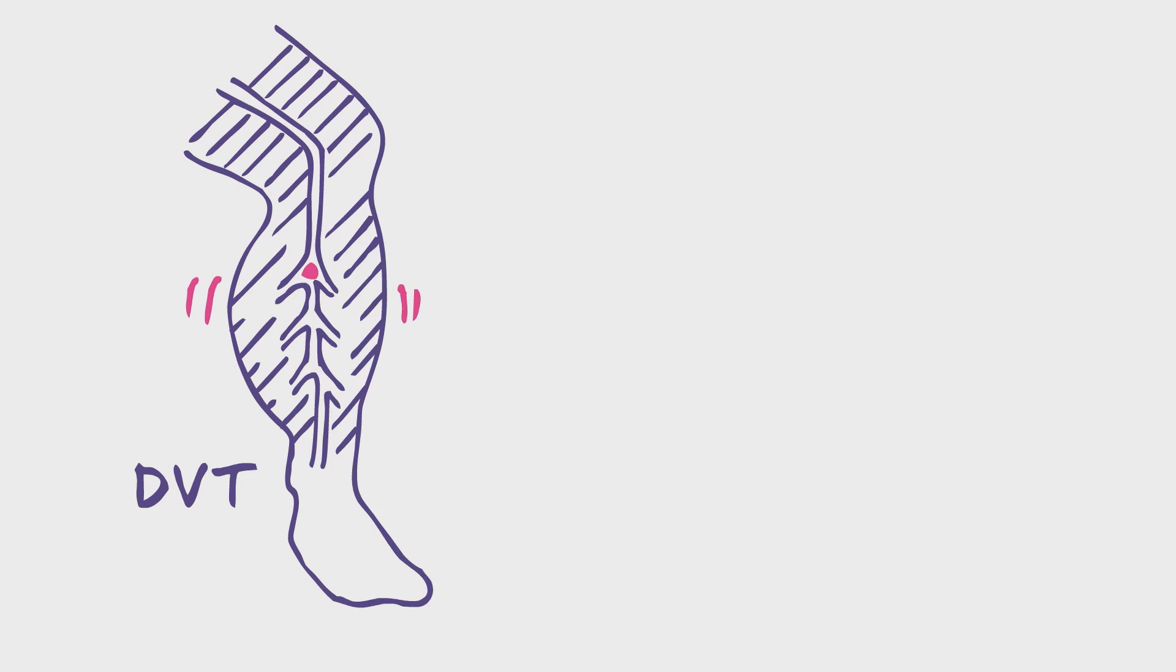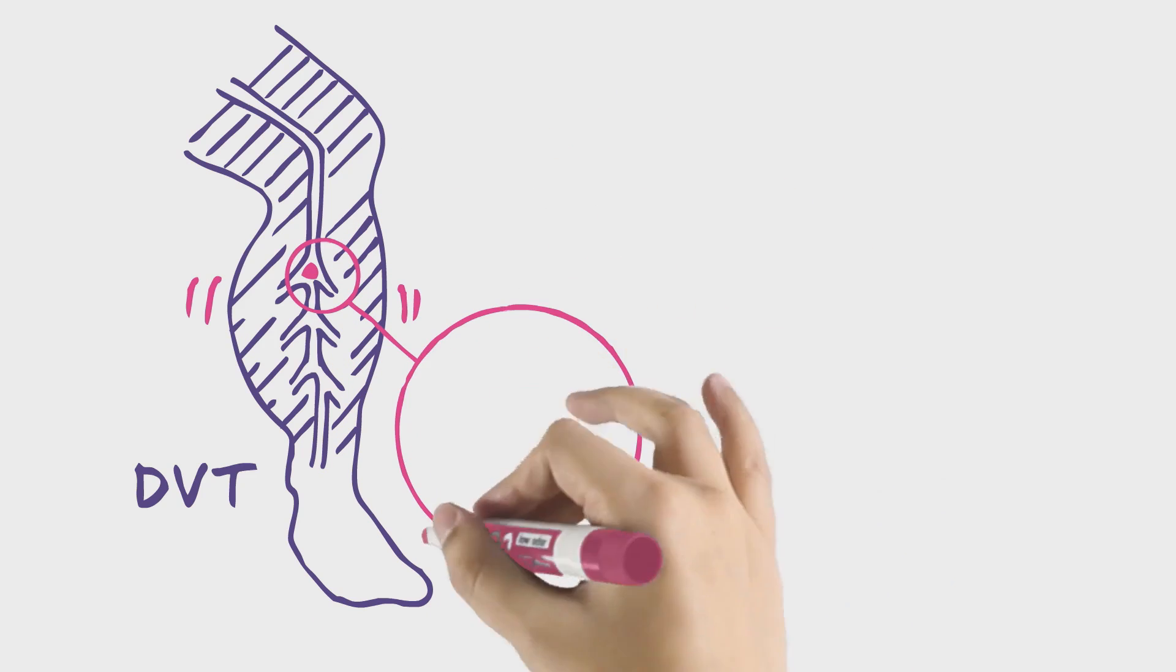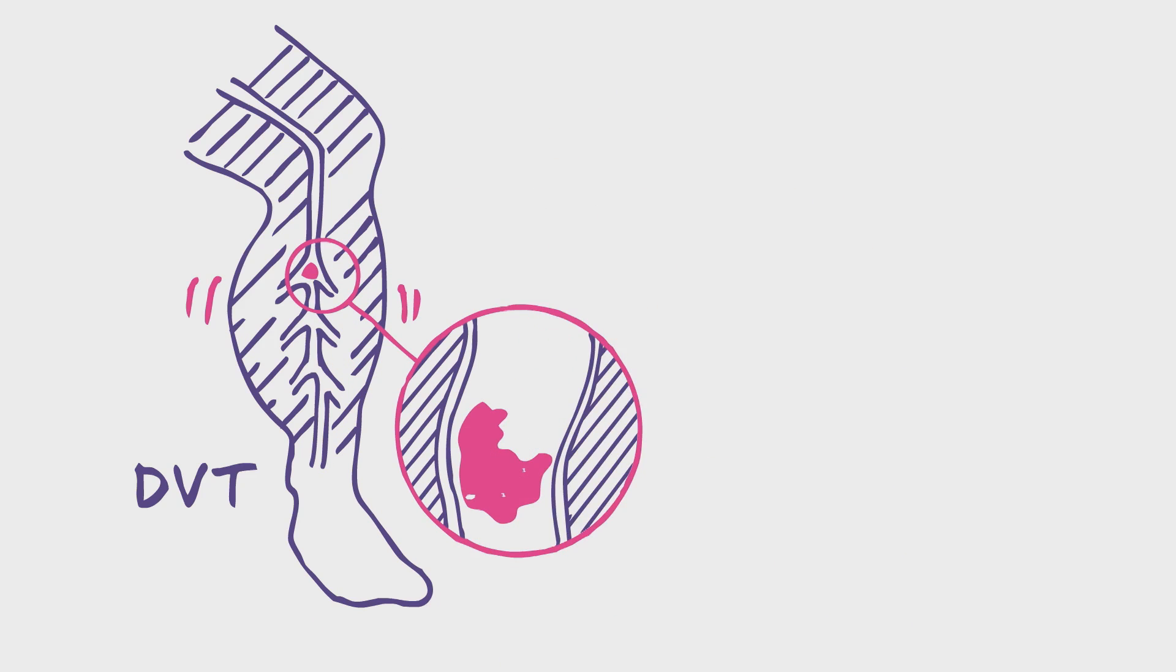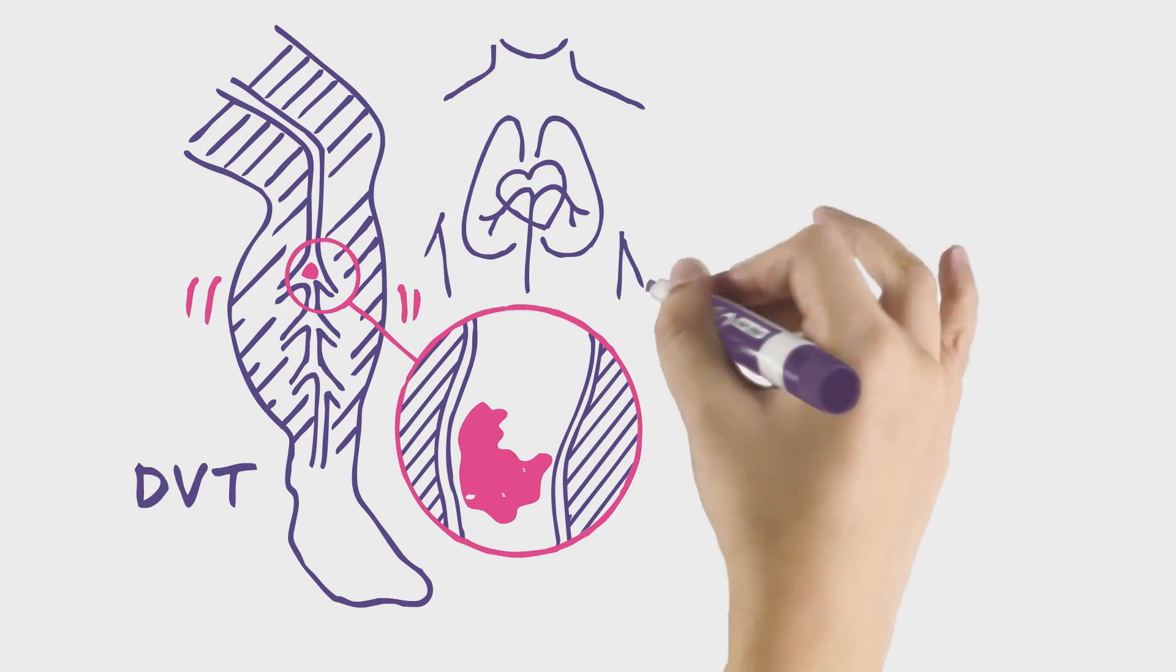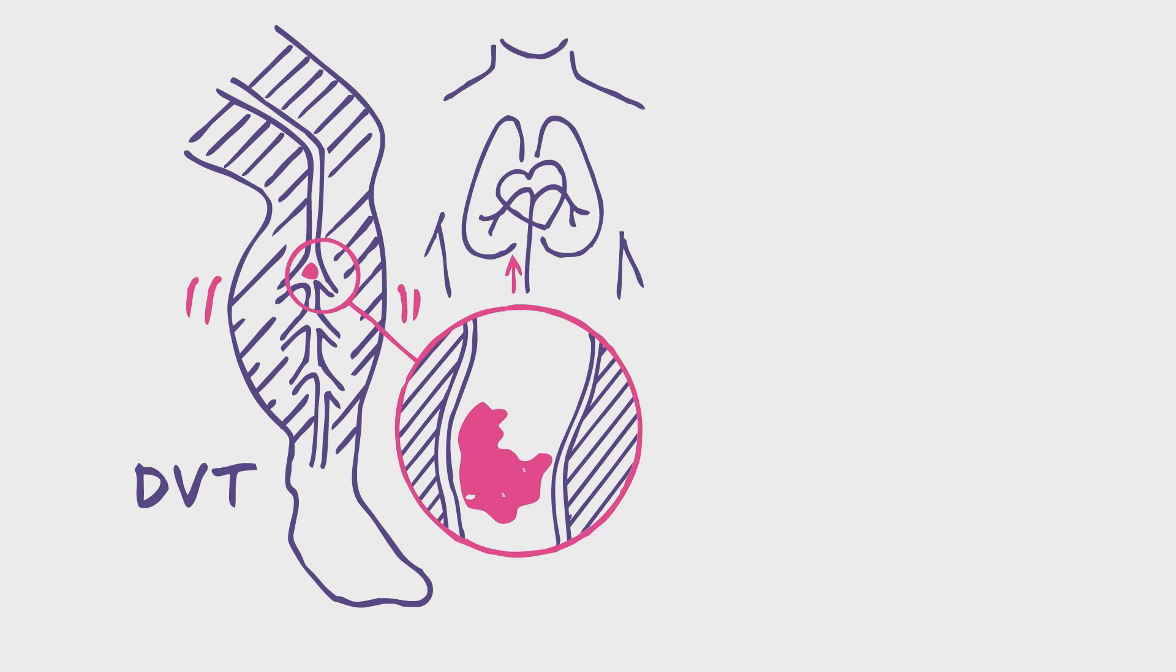This condition is called deep vein thrombosis. If part of the clot breaks away, it can travel through the blood vessels, up to the heart, and from the heart out into the lungs.